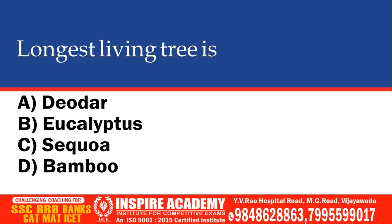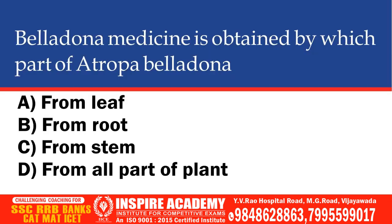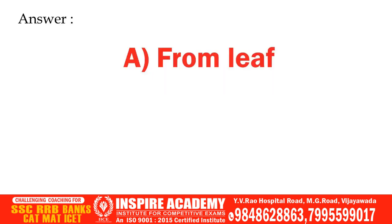Belladona medicine is obtained from which part of Eucalyptus? Options: From leaf, From root, From stem, From all parts of plant. The correct option is From leaf.